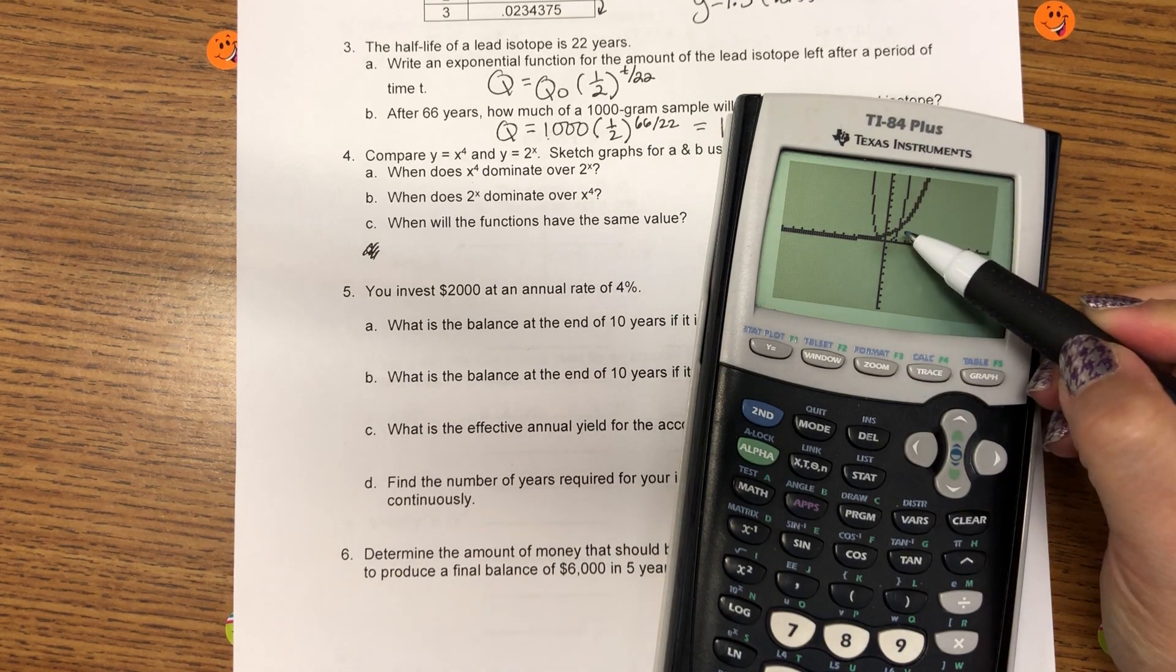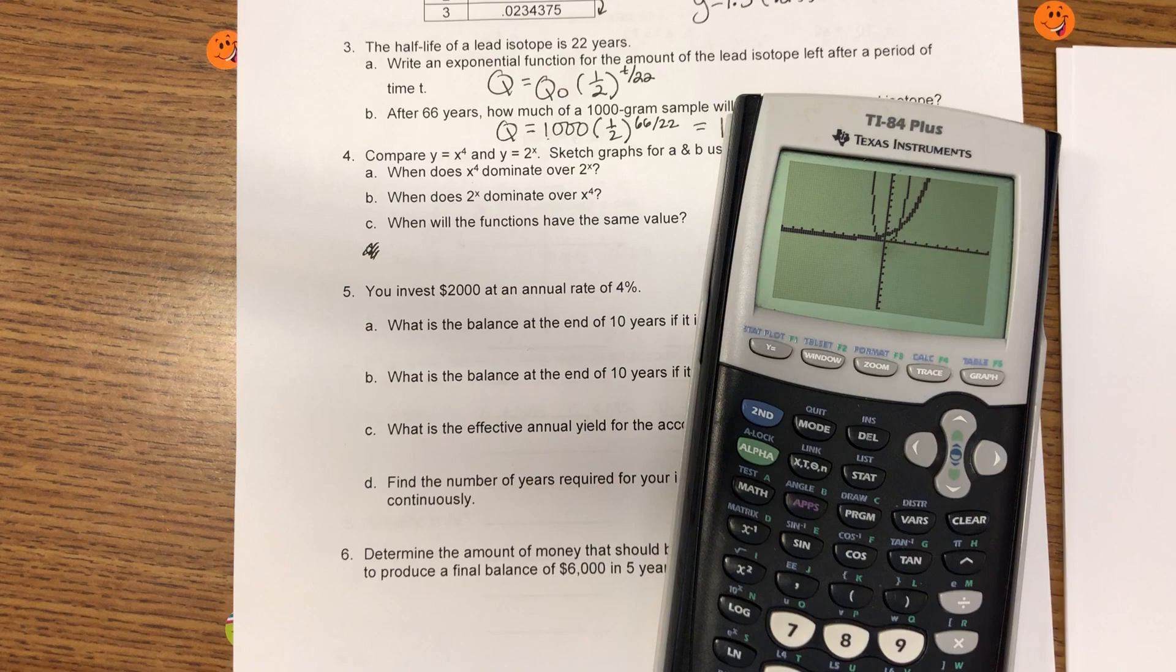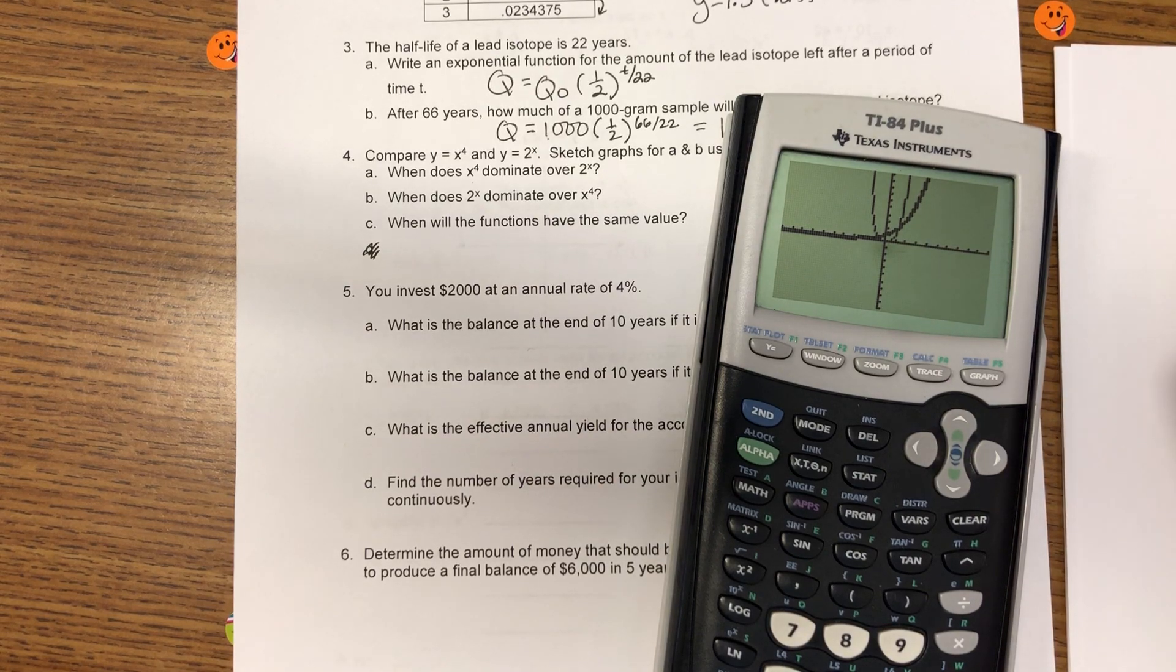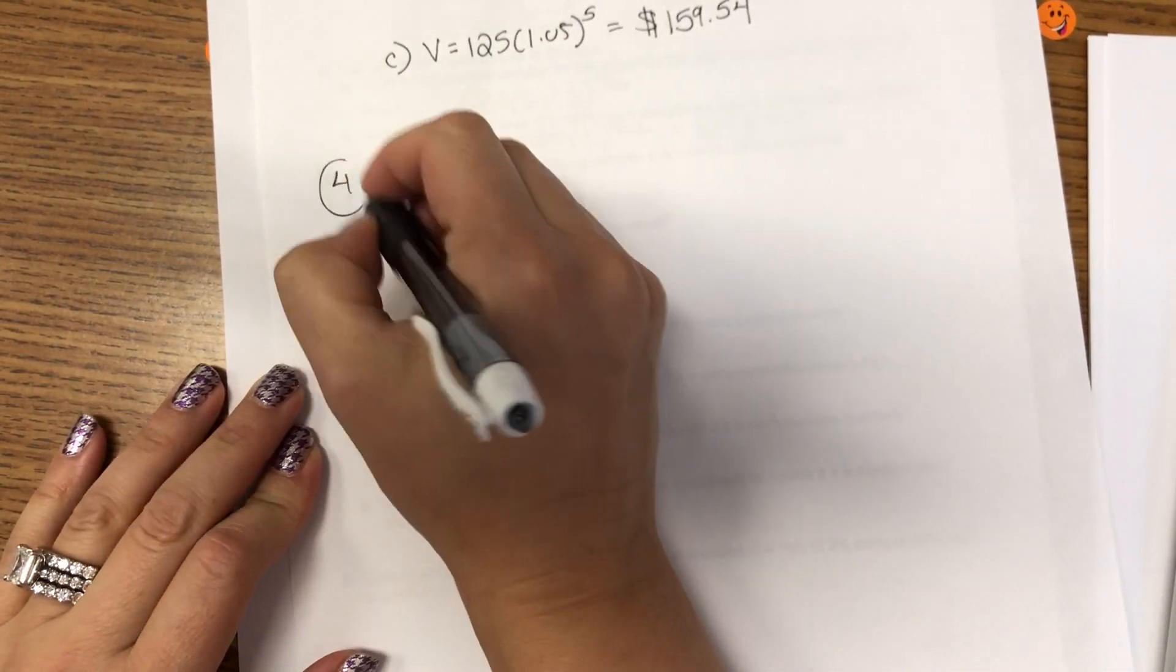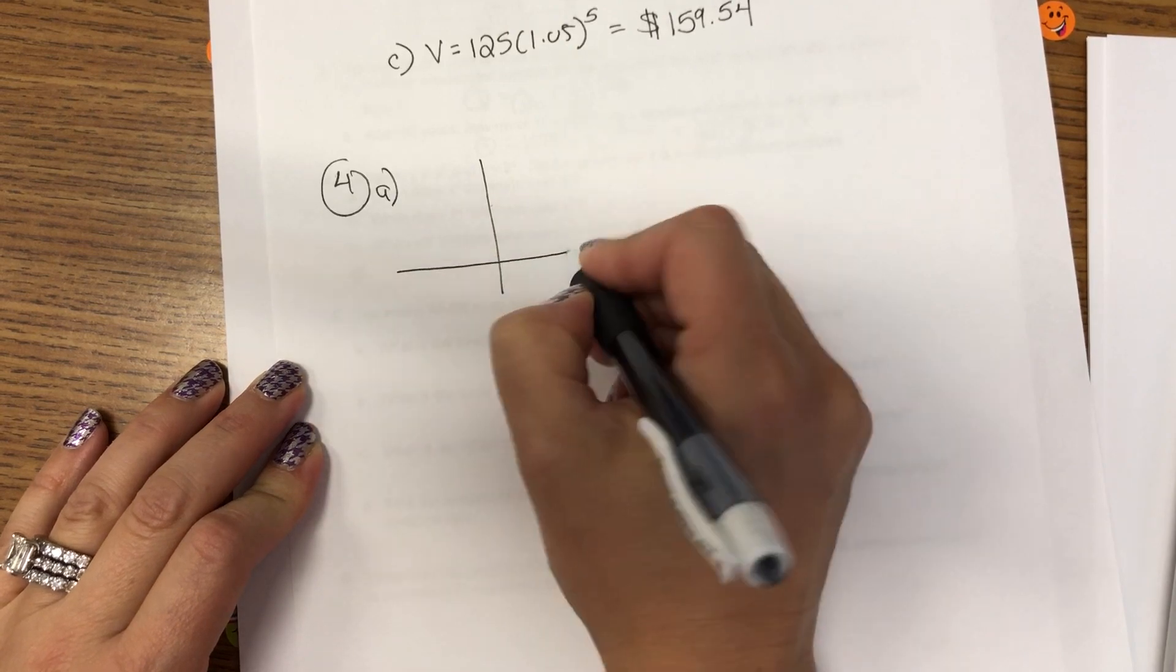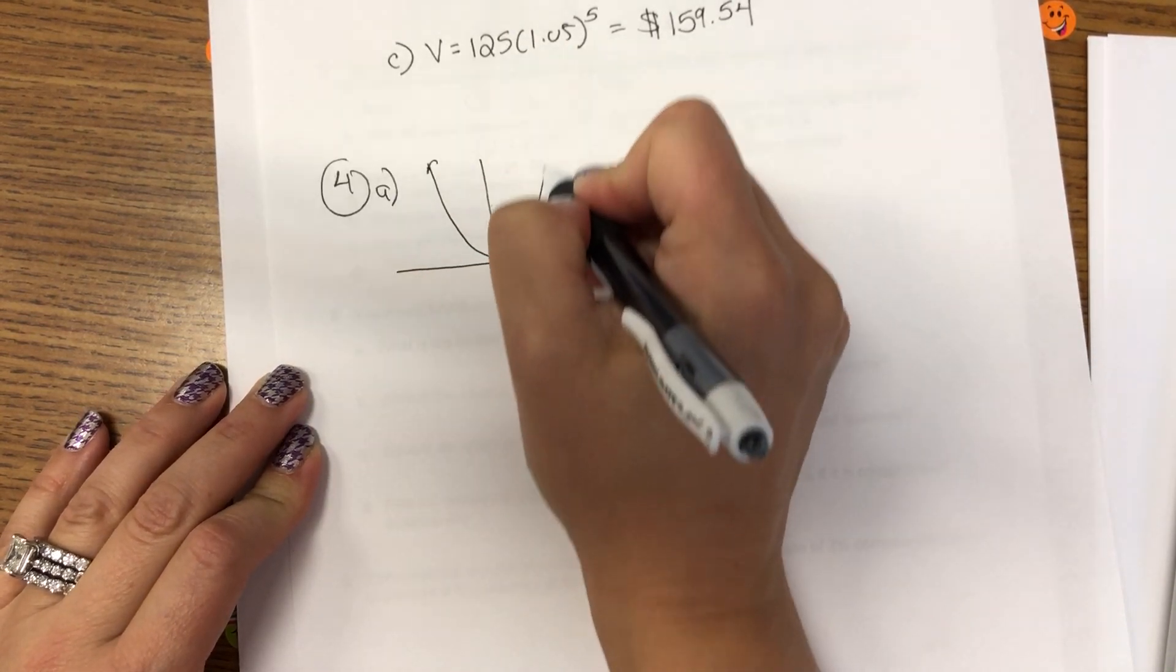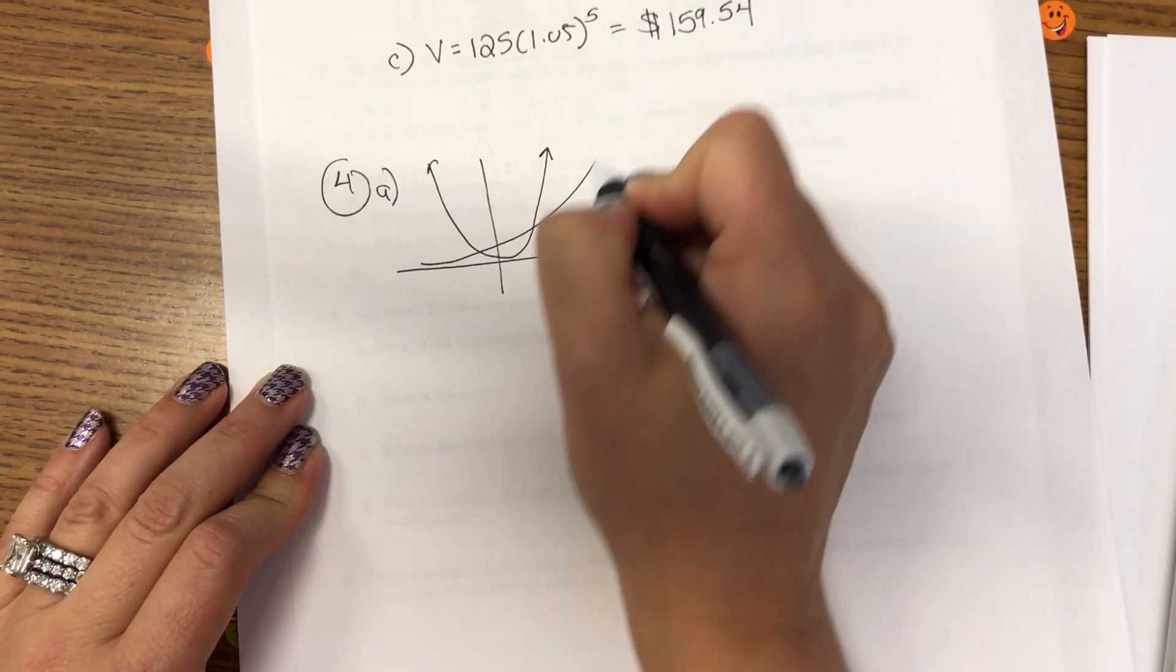So, when I hit graph, let me just do zoom 6 to start. When I graph, the exponential will be bold, and that way I'll be able to see a difference. Okay. So, automatically right here, I can see the graphs intersect.